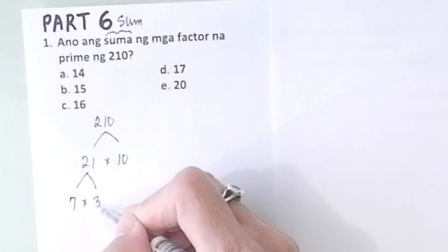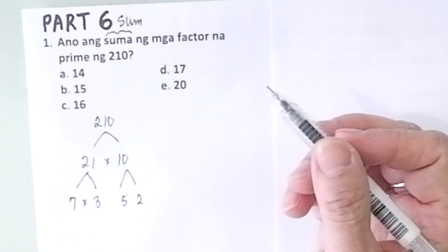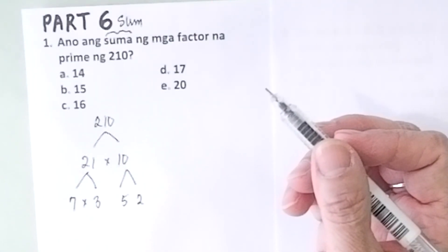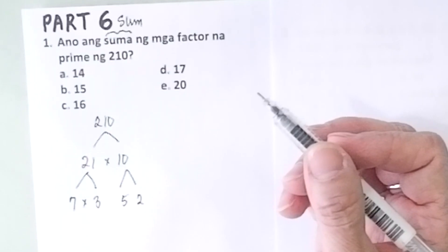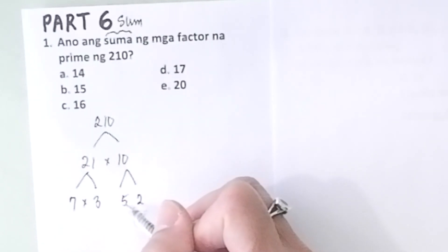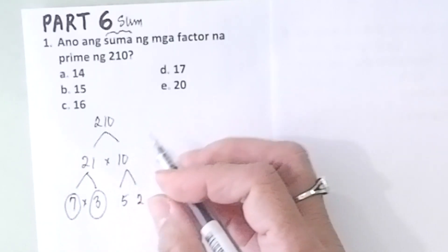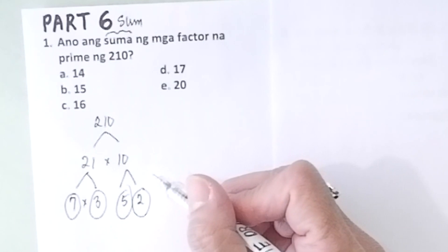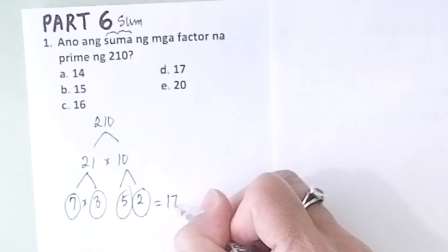Like 7 and 3, 5 and 2, and then stop. Are these all prime? Yes. What is a prime number again? A number which has no other factors than itself and one. So this is prime, this is prime, prime, prime. So you just add all of this: 7 plus 3 is 10, 10 plus 5 is 15, 15 plus 2 is 17. Add them all, you get 17. The correct answer is letter D.